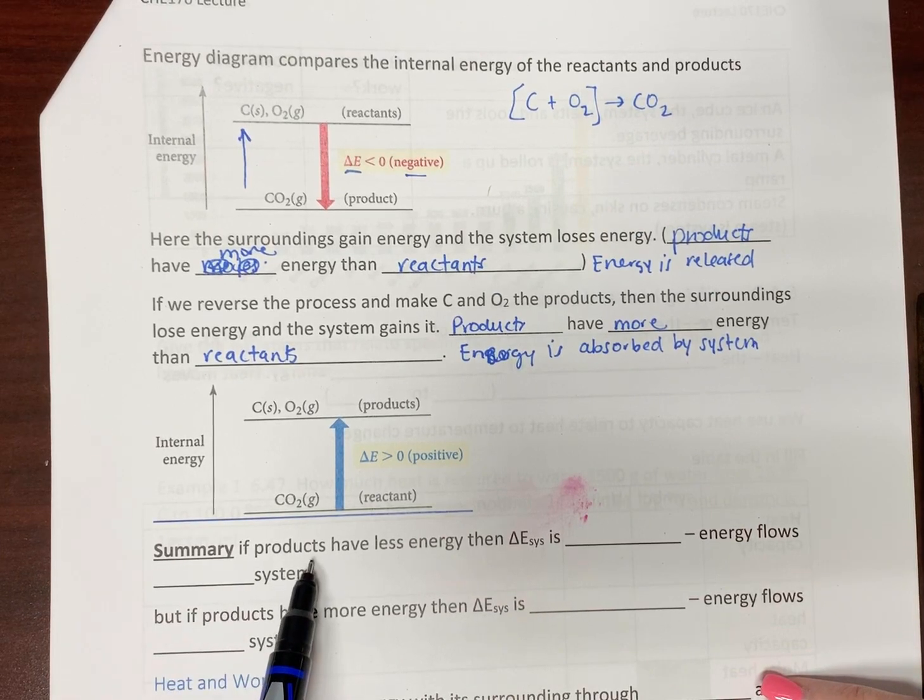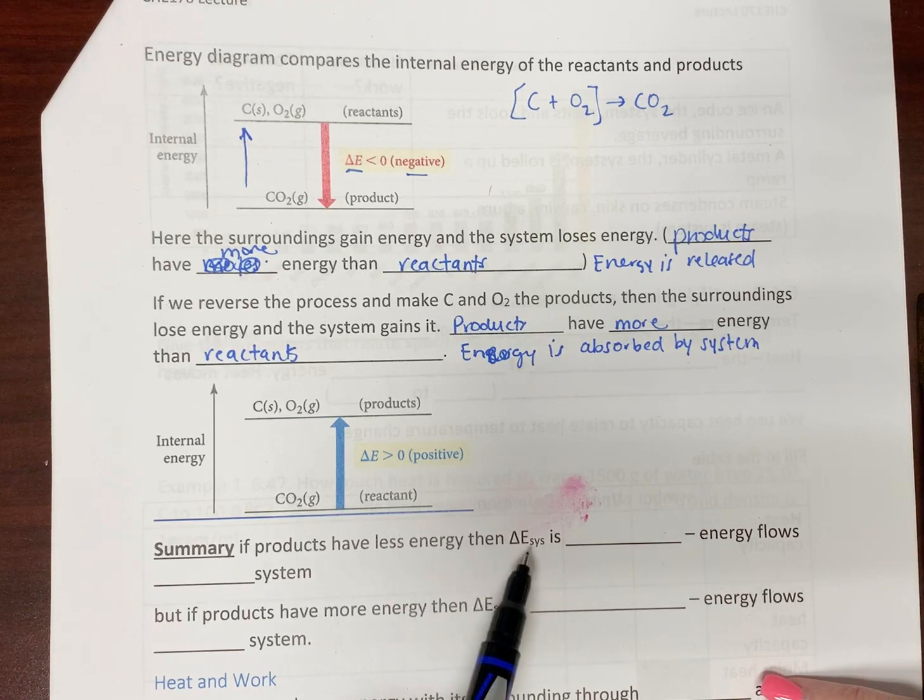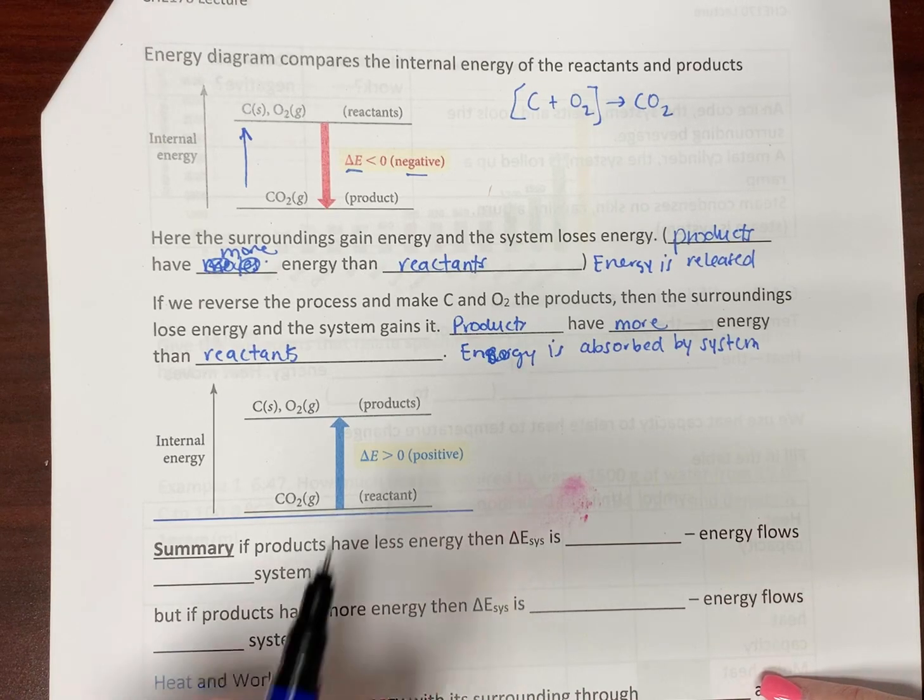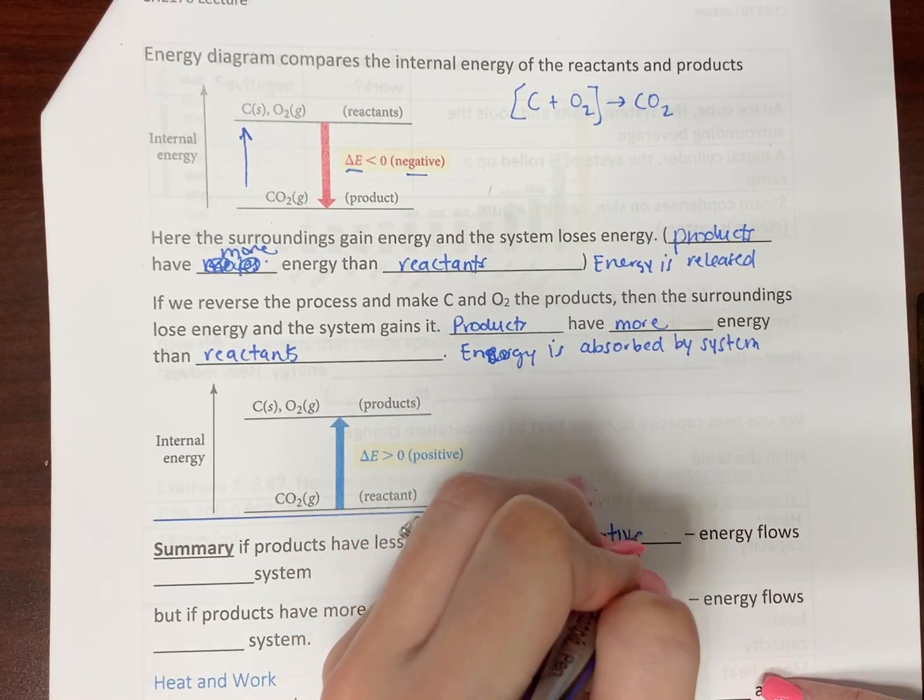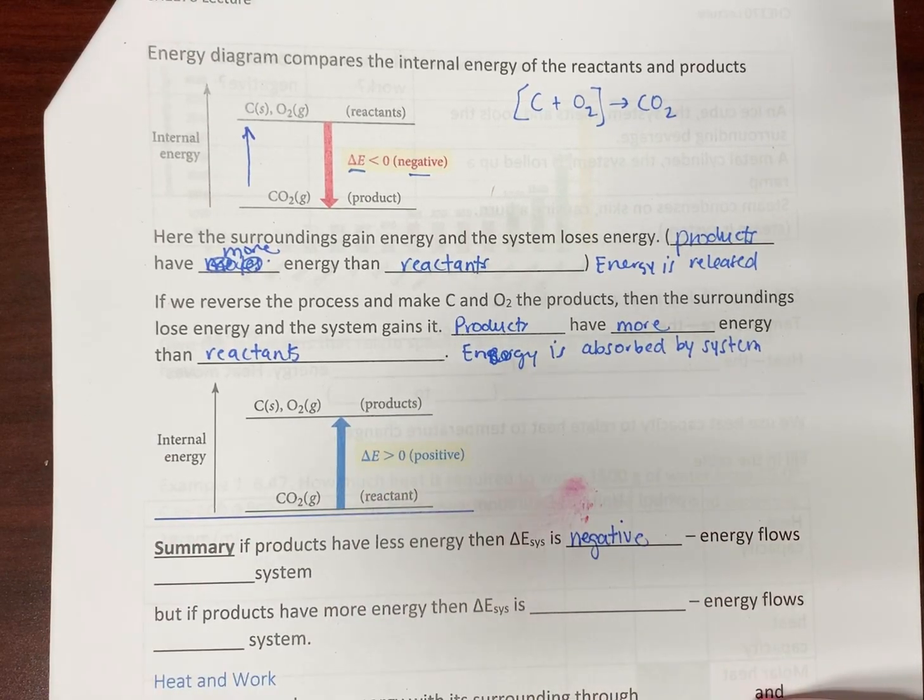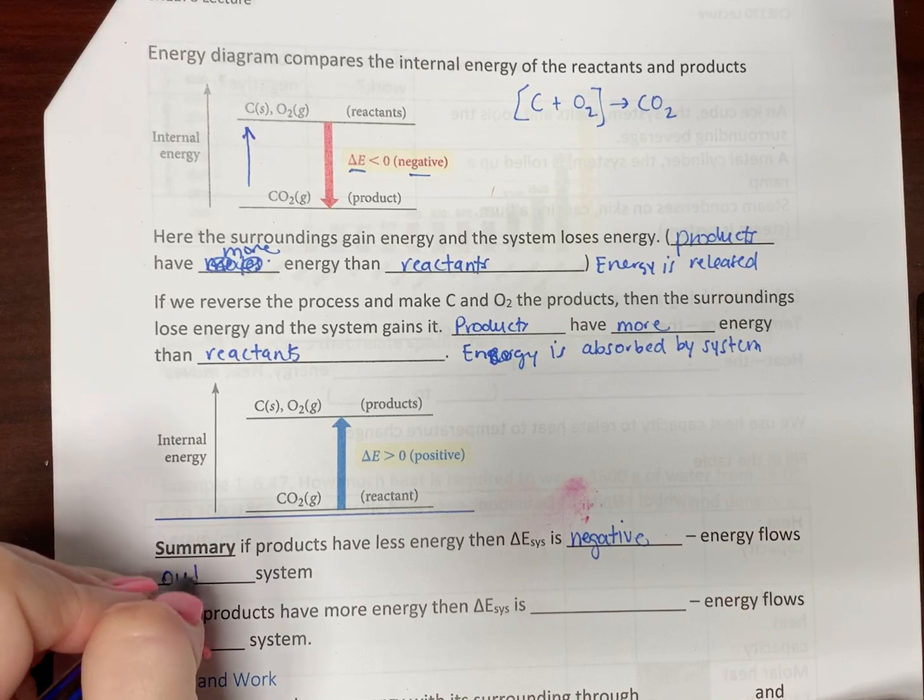So, here. If the products have less energy than the reactants, then the system loses energy. When you lose energy, when you lose energy, we call that negative. Negative in physics and in thermodynamics indicates direction. So, that means energy is flowing out of the system.